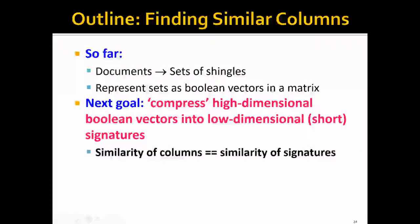So, so far, we have represented the document as a set of shingles, and then we represented the sets of shingles as Boolean vectors in the matrix. And the next step will be to compress these high-dimensional Boolean vectors into low-dimensional signatures, or short signatures. And we want the similarity of these columns, which is the original Boolean vectors, to be the same as the similarity of the short signatures.